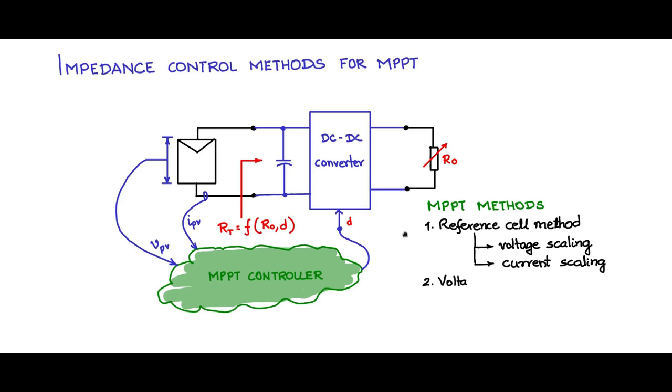The second is the voltage sampling method. The third is called the power slope method. And the fourth one is a hill climbing method.